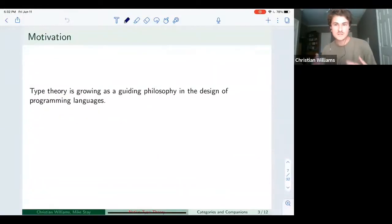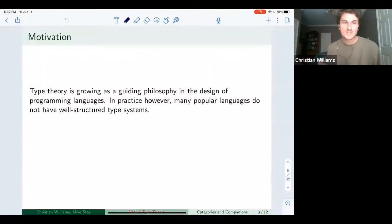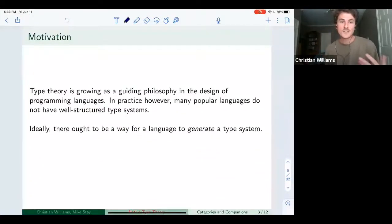So here's the spiel that I plan to give to programmers and computer scientists when we try to actually start implementing this idea. Type theory is growing as a guiding philosophy in the design of programming languages. But in practice, many popular languages do not have well structured type systems. They had other priorities in their design, and they suffice for many applications. But as many of us here would agree, type systems can only improve reasoning and control and communication of systems built in these languages.